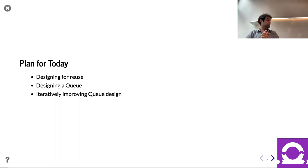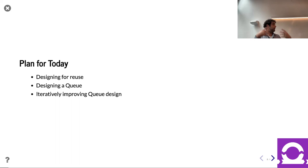We're going to see a total of six different versions of this queue today. That's the way you should do design — rather than having a really ambitious original design and building all the pieces individually and then trying to integrate them, try to build the whole thing simply and then incrementally extend, revise, improve, keeping track along the way of what's working, what's not, what's a bottleneck, and keep attacking what's most productive.